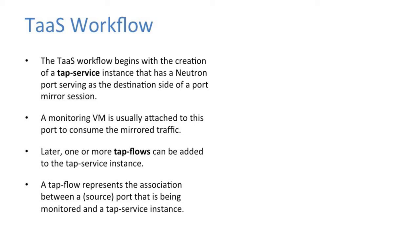Let me explain how the TAP service actually works with the Neutron API. Initially we need to create a TAP service, which is basically an overlying layer that tells us which VM or machine would be the destination, and which port of that machine the mirrored packet would eventually land on. The monitoring VM is usually attached to this port to consume the traffic. The second concept is a TAP flow — the source points from where the packets would actually originate. TAP flows specify a direction, such as ingress, egress, or both, and those packets are mirrored from the source port to the destination port.